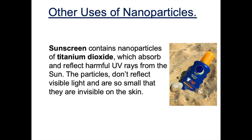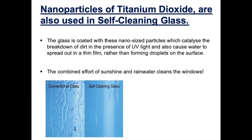It's also important to remember that titanium dioxide in bulk would not be able to have the same use — it's only nanotitanium dioxide that can be used to block out UV light and remain invisible on the skin. Titanium dioxide has been at the forefront of nanotechnology, and nanotitanium dioxide is also found in self-cleaning glass. The glass is coated with nano-sized particles of titanium dioxide, which speed up the breakdown of dirt in the presence of UV light and cause water to spread into a thin film rather than droplets, so the combined effect of sunshine and rainwater cleans the windows.